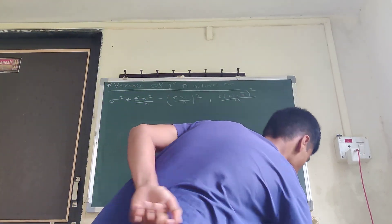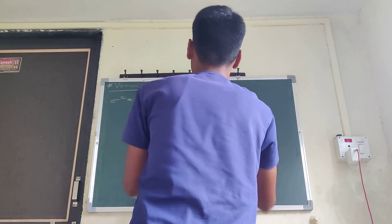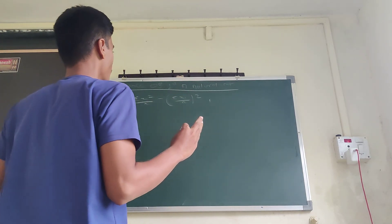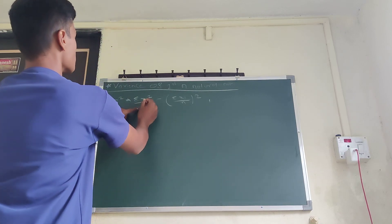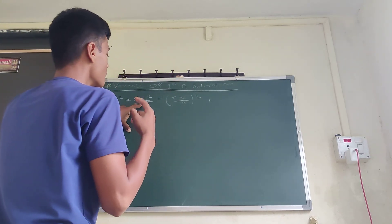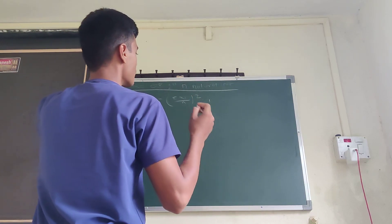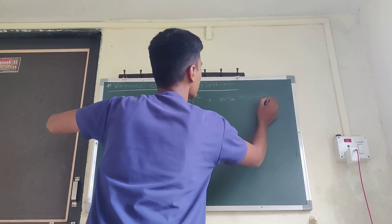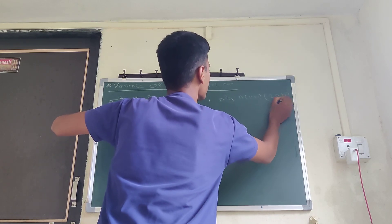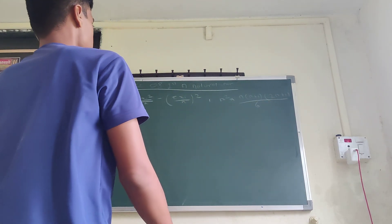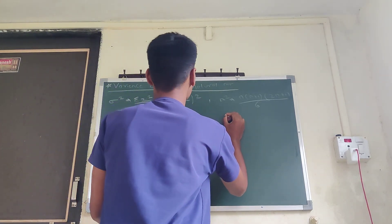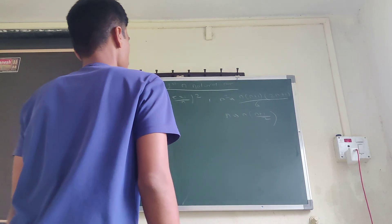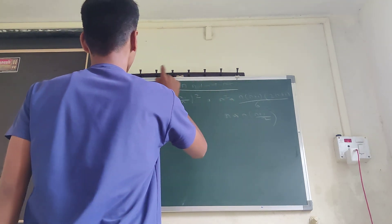In this video we are going to use the first formula of variance. For the variance of the first n natural numbers, we need two properties: first, the sum of the first n squared natural numbers is n(n+1)(2n+1) upon 6; and second, the sum of the first n natural numbers is n(n+1) upon 2.